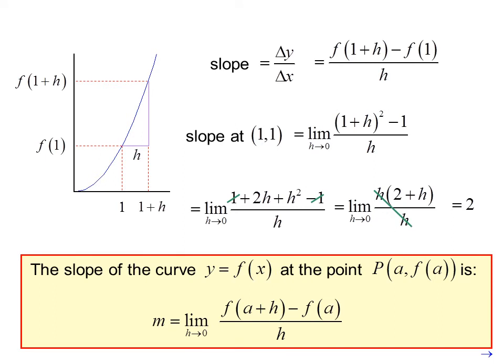The slope of the curve y equals f(x) at the point P(a, f(a)) is m equals the limit as h goes to 0 of f(a plus h) minus f(a) over h. Notice in the example problem we didn't find the approximate slope, we found the exact slope.